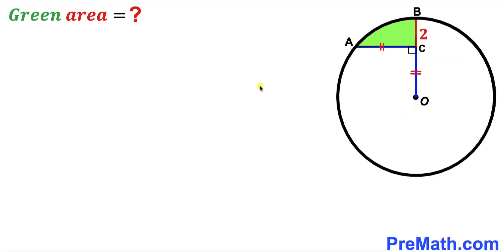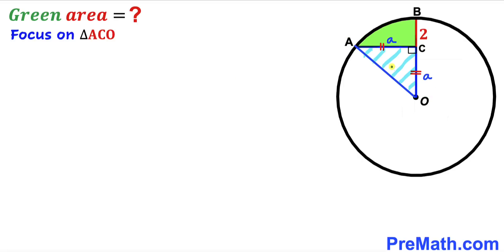Let's get started. We'll label the side length of segment AC and OC as lowercase a — since OC and AC are equal, both are a. In the next step, I've connected center O with vertex A, and now let's focus on right triangle ACO. We can see that AO is the radius of the circle, labeled as lowercase r.